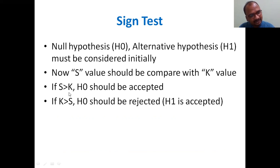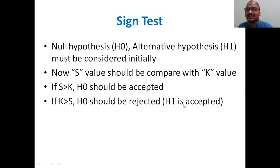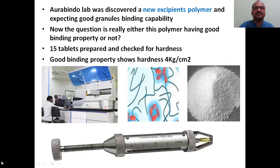You must first state the null hypothesis and alternative hypothesis. Then compare S with K: if S is greater than K, accept H0; if K is greater than S, accept H1. Now let's move to the example — the Sign Test is a very simple test.